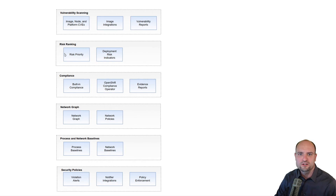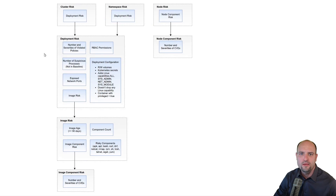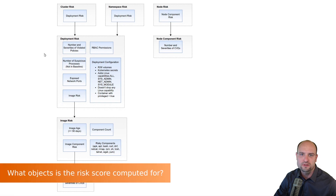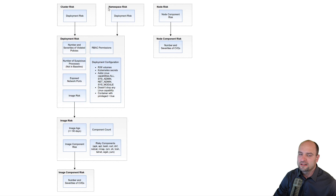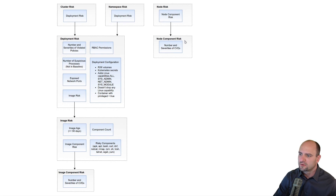So how is the risk score computed for the different objects? This diagram depicts how Red Hat ACS computes the risk score. The risk score is computed for the individual container image components, then also for the container images, then for the deployments running on your cluster, and also for the existing Kubernetes namespaces on the cluster. Red Hat ACS also assigns a risk score to the individual cluster node components, to the cluster nodes, and finally to the whole cluster.